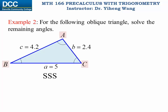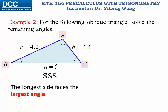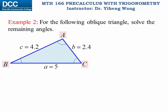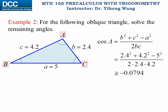To identify the largest angle, recall that the longest side always faces the largest angle. In this triangle, side a equals five and is the longest, so angle a is the largest. If there is an obtuse angle, it must be angle a. We write the alternative form for angle a, substitute in sides a, b, and c, and calculate cosine a to be negative — confirming angle a is obtuse. Using the inverse cosine function, angle a equals 94.6 degrees.